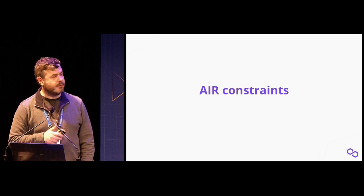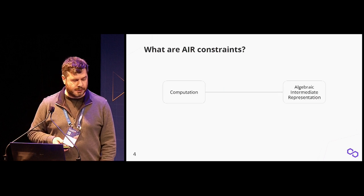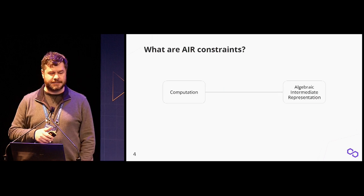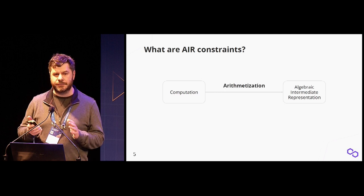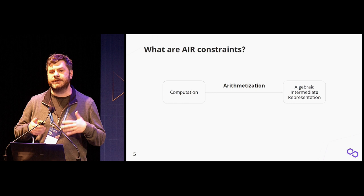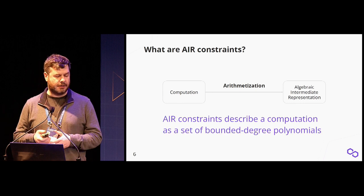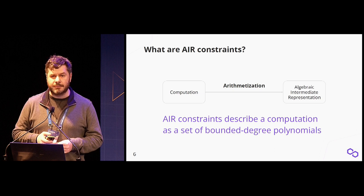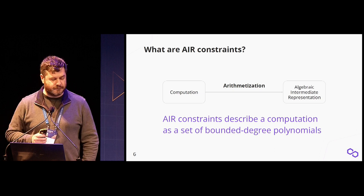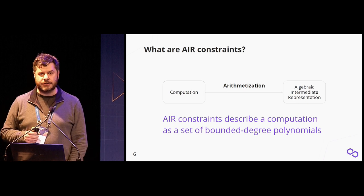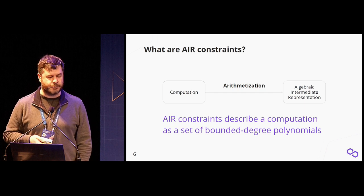First, I want to give a brief overview of what AIR constraints are to set the context. When we talk about AIR constraints, we basically need to take a computation and convert it into a set of algebraic statements—specifically, we want to describe a computation as a set of bounded-degree polynomials. The step of transforming the computation into this set is called arithmetization, and what we get at the end is the algebraic intermediate representation, or AIR for short.